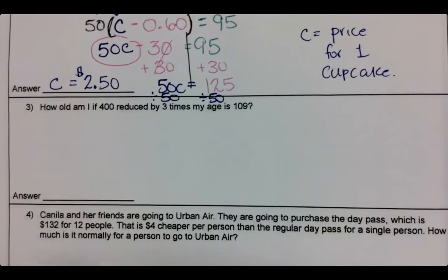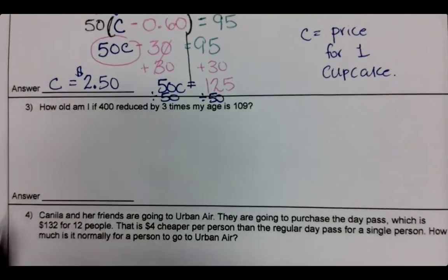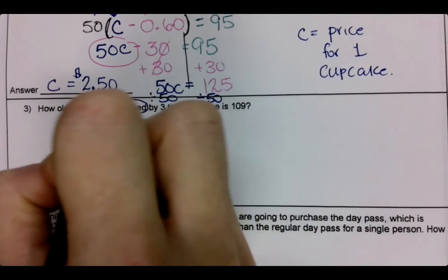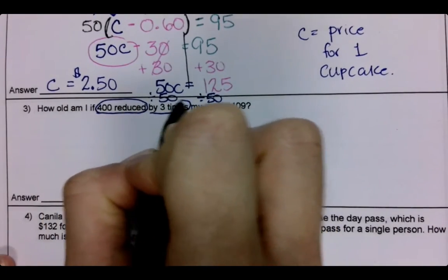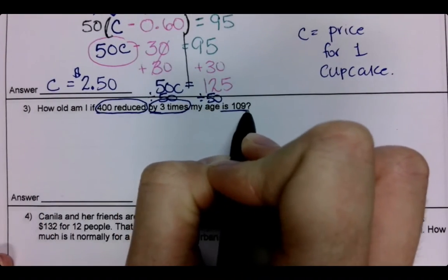All righty, number three. How old am I if 400 reduced by three times my age is 109?